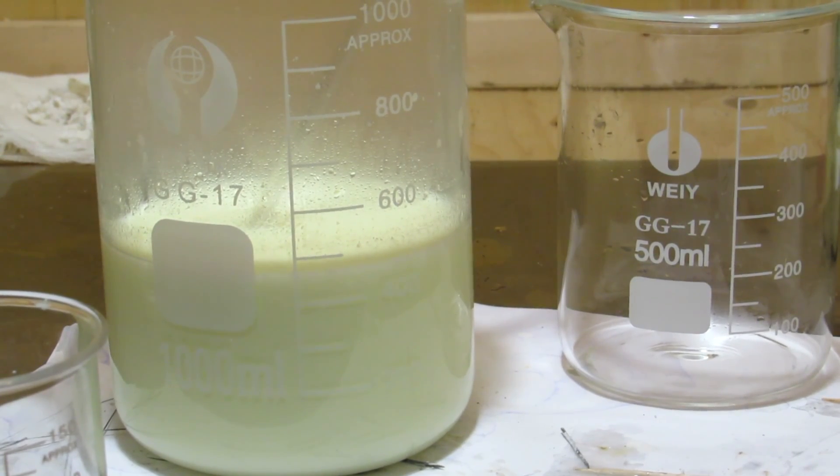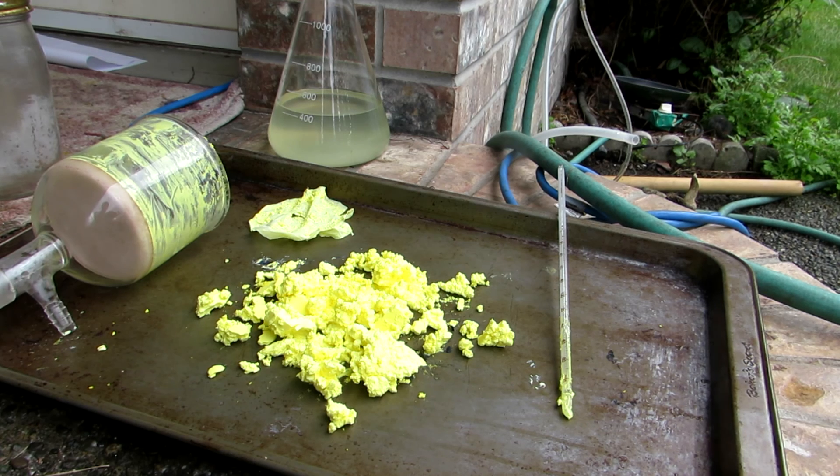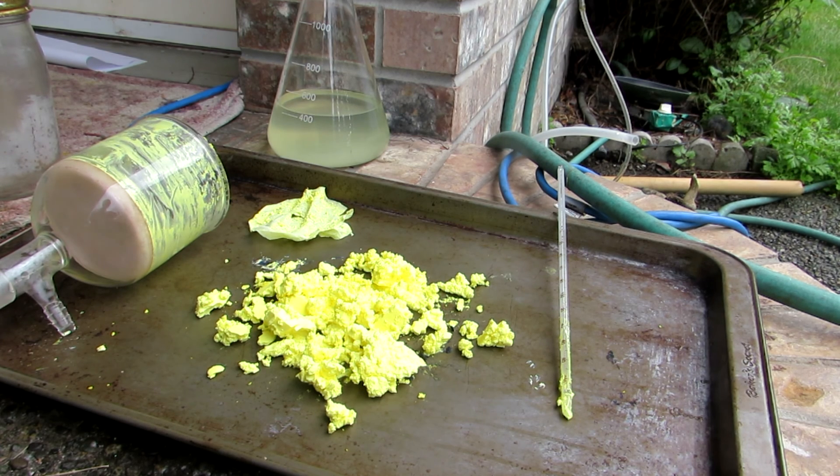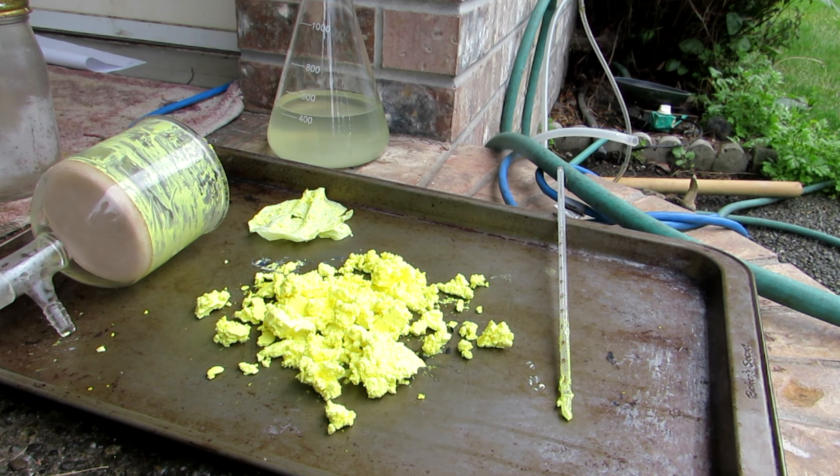However, after mixing the solution, it took on a light canary yellow color. The solution was vacuum filtered and then transferred to an oven at about 150 degrees Celsius to decompose the tungstic acid to tungsten trioxide. The decomposition occurs around 100 degrees Celsius.